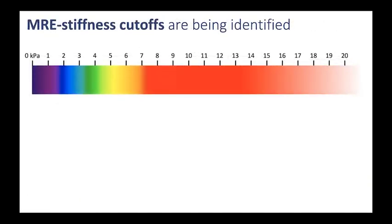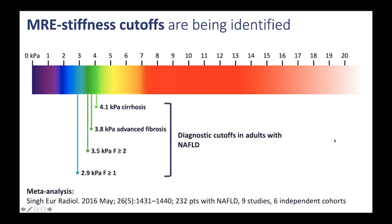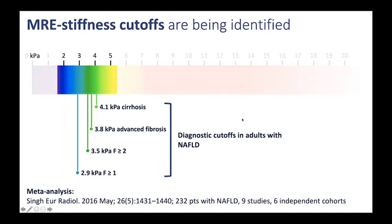When you do MRE, the stiffness value can range from 0 kilopascals to greater than 20 kilopascals. The stiffness cutoffs that correlate to different fibrosis stages are being identified. Results from a recent meta-analysis show the diagnostic cutoffs in adults with non-alcoholic fatty liver disease. These diagnostic cutoffs are clustered into a relatively narrow zone between 2 to 5 kilopascals: 2.9 kilopascals suggests fibrosis at least stage 1; 3.5 at least stage 2; 3.8 advanced fibrosis; and 4.1 suggests the presence of cirrhosis.